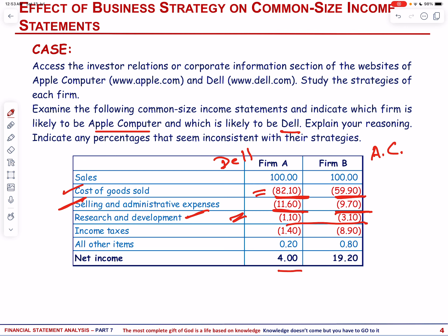Next, let us talk about net income to sales percentage. The difference in profit margins between Dell and Apple primarily reflects their distinct business strategies and market positions. Apple positions itself as a premium brand known for high-quality products with a focus on design, innovation, and user experience. Their products such as iPhones, MacBooks, and iPads are generally priced at higher points compared to competitors. This premium pricing allows Apple to achieve higher profit margins on each unit sold, and despite potentially lower sales volume in some categories, Apple's ability to command higher prices results in a higher profit margin.